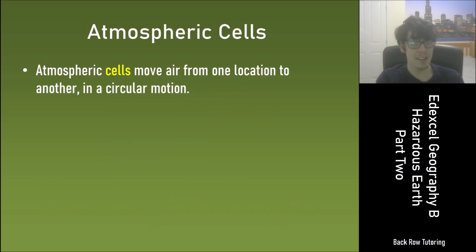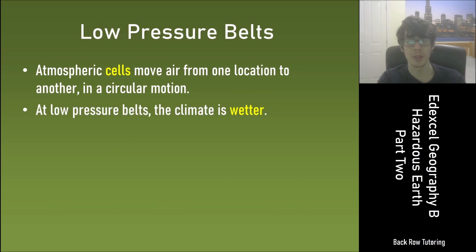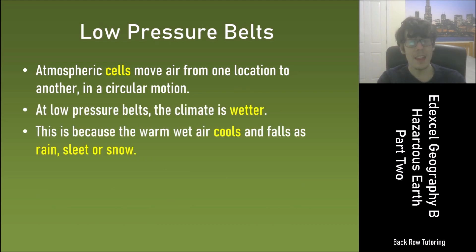Atmospheric cells move air from one location to another in a circular motion. At low pressure belts the climate is wetter. This is because the warm wet air cools and falls as rain, sleet or snow.